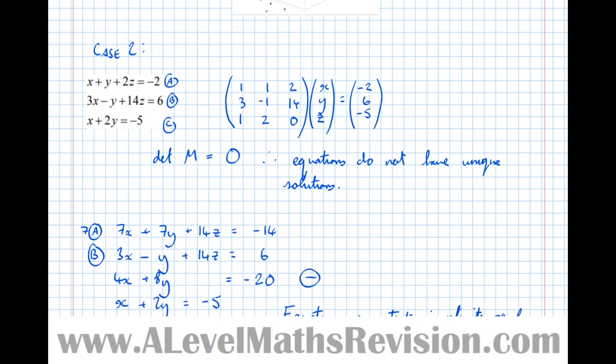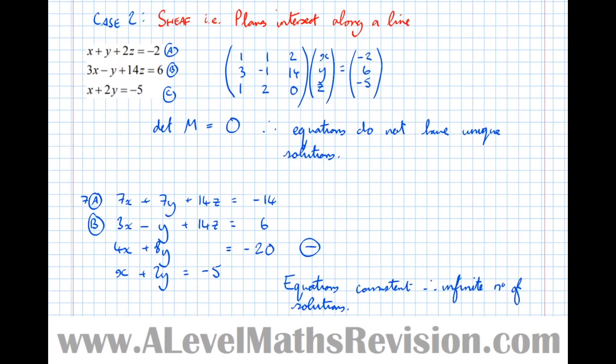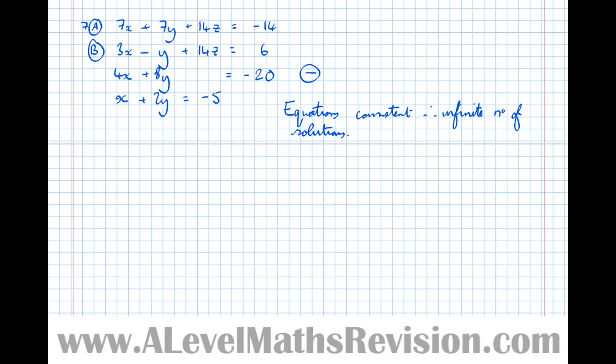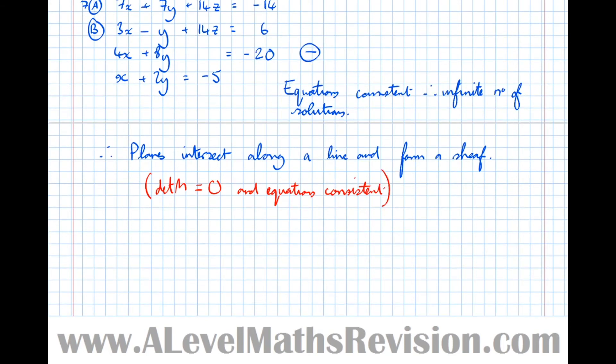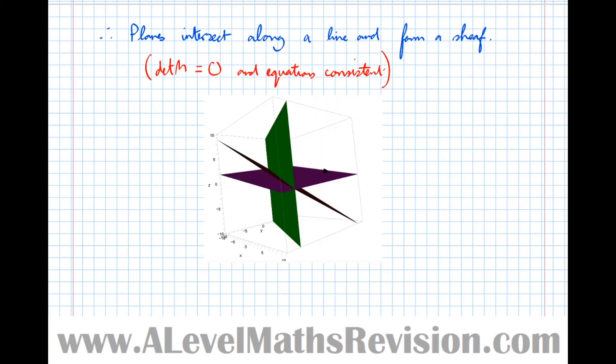And that particular structure there where all three planes intersect along a line is called a sheaf. So let's name this case: case 2 is a sheaf. I.e. planes intersect along a line. So equations consistent, therefore infinite number of solutions, therefore planes intersect along a line and form a sheaf. And just remind ourselves of the conditions for that: det M equals zero and equations consistent. And just to put a picture on there, there it is, a sheaf of planes.